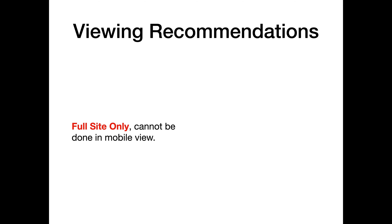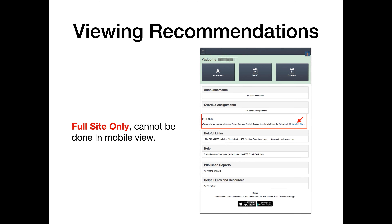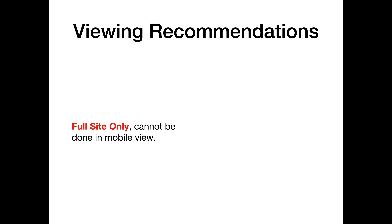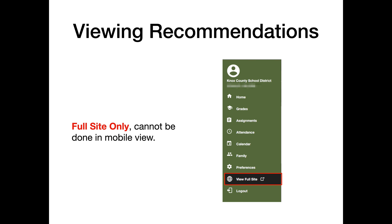Viewing a recommendation can only be done on the full site in Aspen. It cannot be done in the mobile view. However, you can access the full site in mobile view. If you're a student, on the main screen, look for the section that says full site and click on the link to view full site. If you're using the parent mobile, click on the menu in the upper left corner and choose view full site from the list.